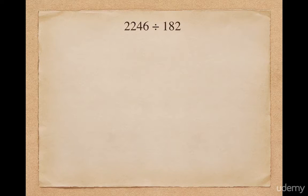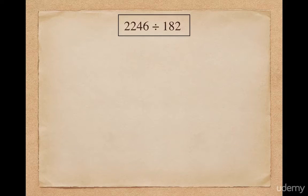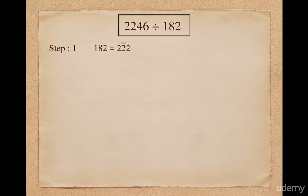Let's move to another example. Suppose I want to divide 2246 by 182. 182 starts with 1 and is greater than a power of 10, so we can definitely apply Parvartiya method, but for simplicity convert the bigger digit 8 into a smaller digit using Vinaculum. I convert 182 into 2 2-bar 2 using Vinaculum concept; 2 2-bar 2 divided by 2 gives me the final divisor which is 1 1-bar 1. Here we can use the Parvartiya formula.